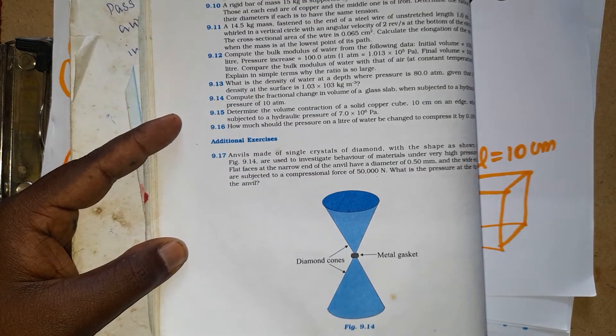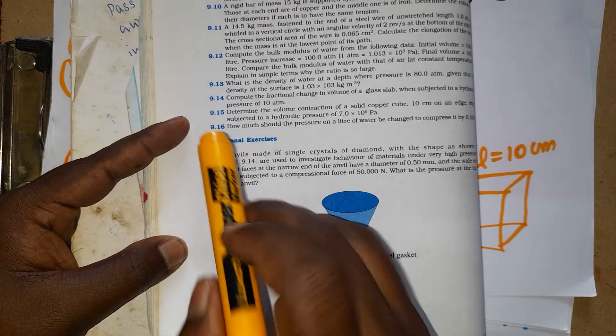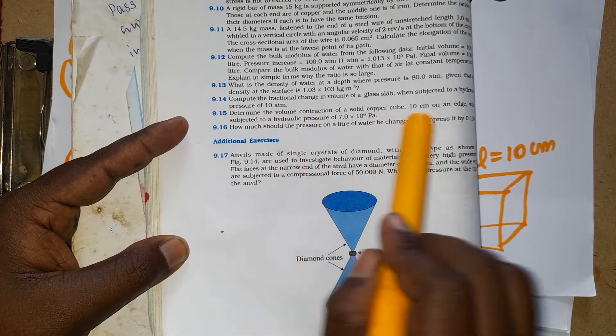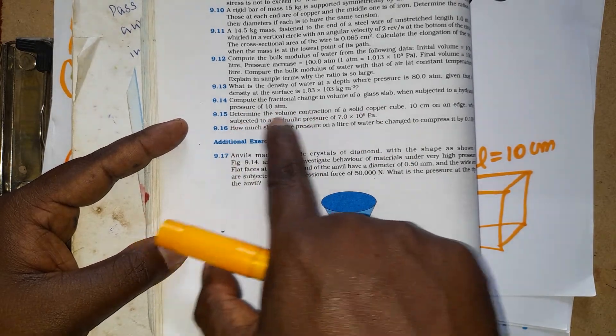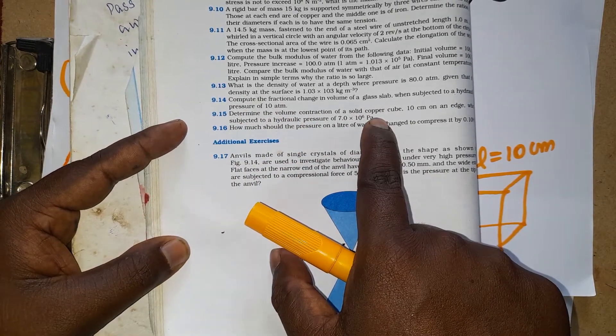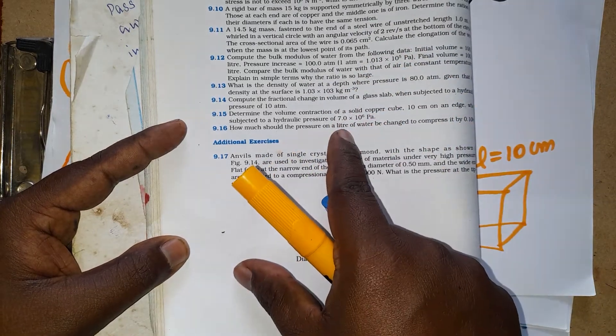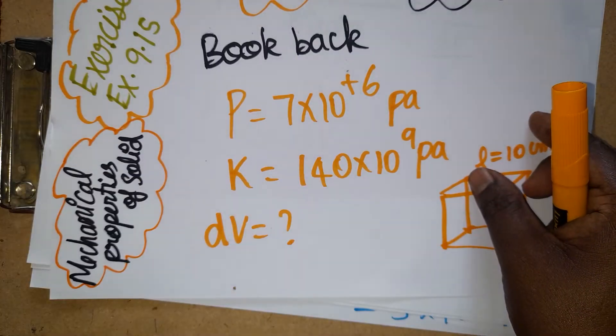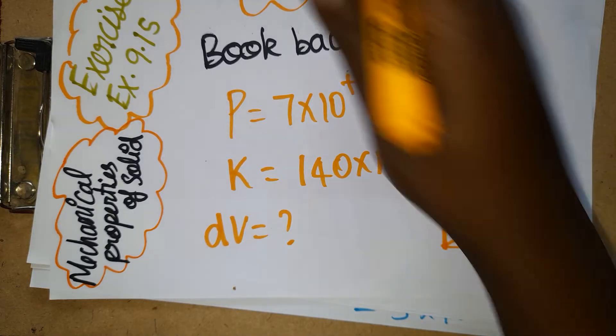Hello students, today we are going to see Class 11 Physics NCERT example Problem 15 from Chapter 9. This is the problem we are going to discuss. Now, they asked what is the changing length dV. The problem is based on bulk modulus.